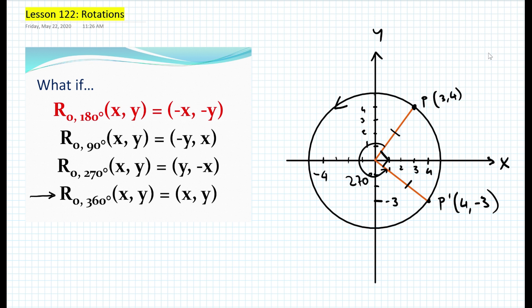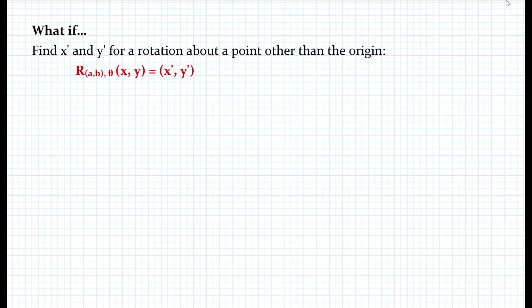Something that becomes more challenging is if you rotate a point by an arbitrary angle — say 30 degrees or 57 degrees. In that case, you would have to use trigonometry and more advanced mathematics that is not covered in honors geometry here. So what if we have a rotation of point (x, y) by an amount theta about a point other than the origin, say some arbitrary point (a, b)? How would you find the image (x prime, y prime)? Let's sketch it out.